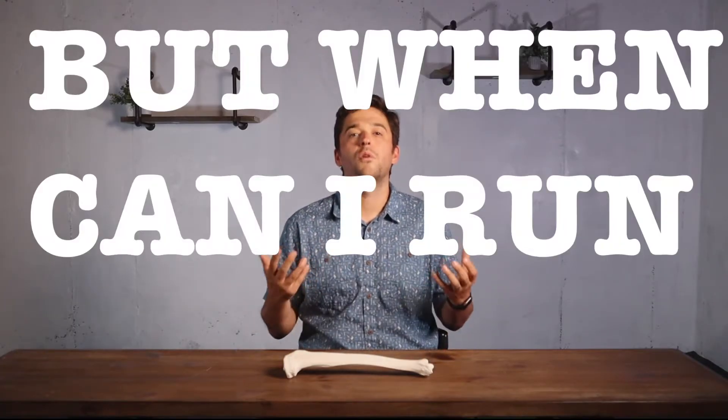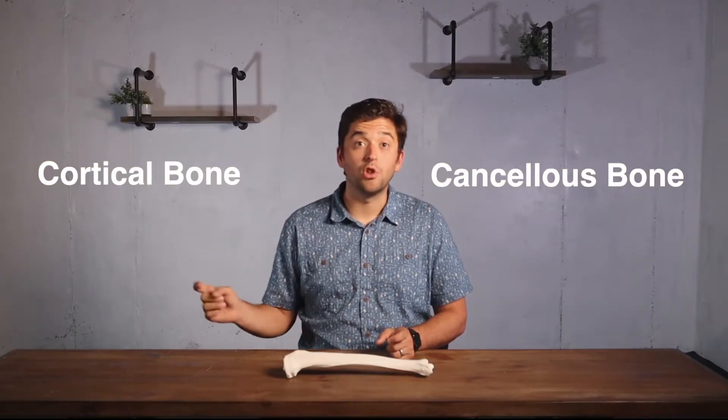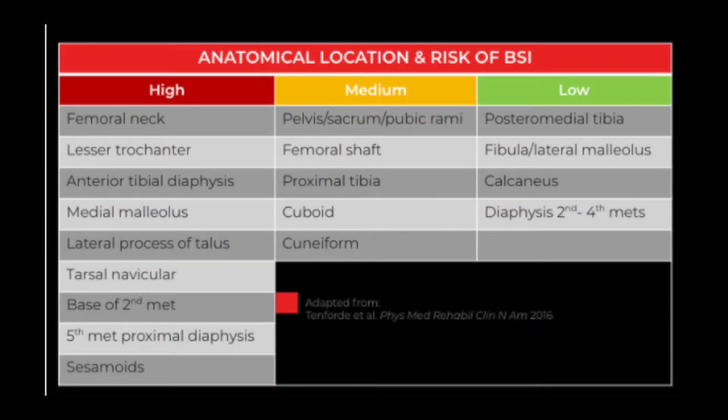That's the general process for how healing happens, but how long is it going to take to get back to running? We have two types of bone in our body: cortical bone and cancellous bone. Cortical bone is more present at the ends of long bones and is more sturdy in nature. Cancellous, or spongy bone, is more present in our spine, pelvis, and the proximal aspect of our hips. We get stress fractures in both bone types, and they heal at different rates. We categorize bone stress injuries into high, medium, and low risk — a big reason being that different bones are made up of different percentages of cortical and cancellous bone.